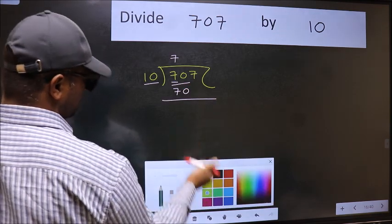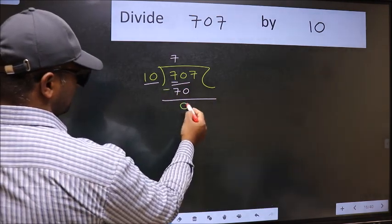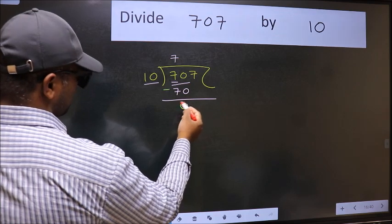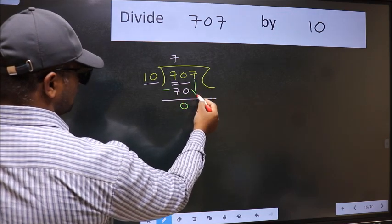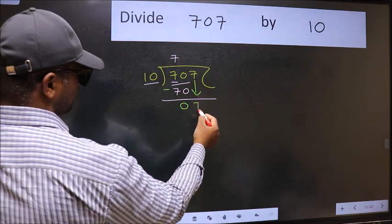Now we should subtract. We get 0. After this step, bring down the beside number. So, 7 down.